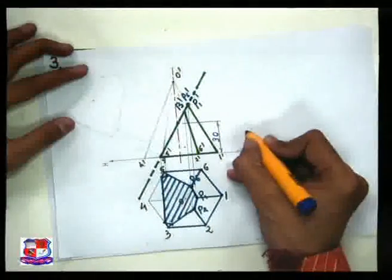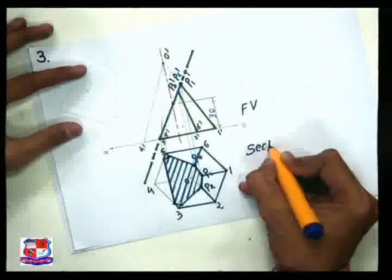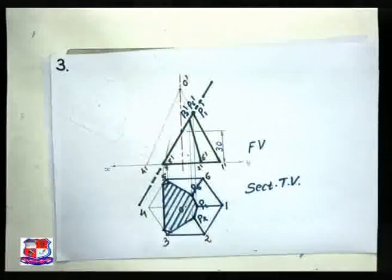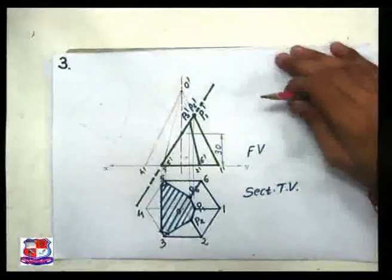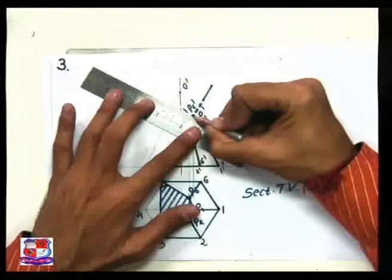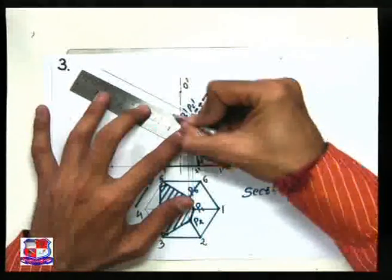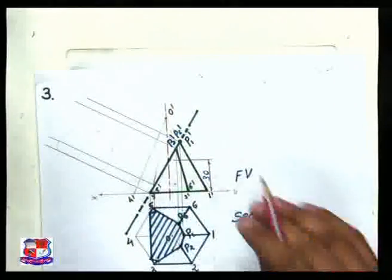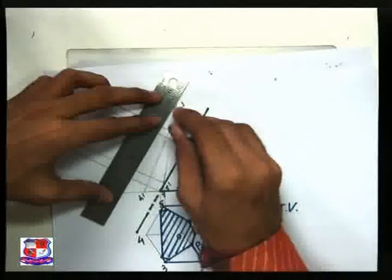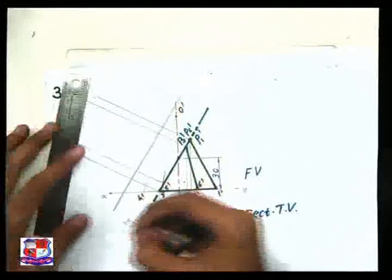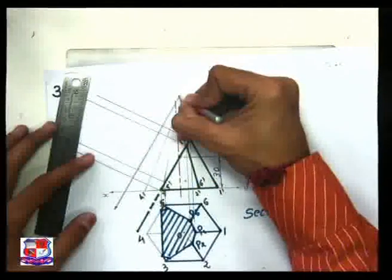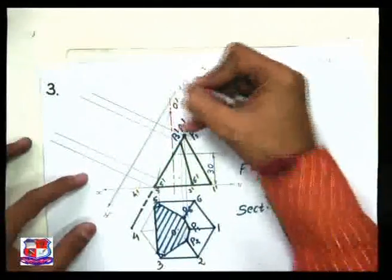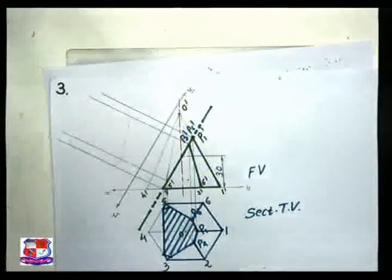This is the sectional top view. You can write the name — this is the front view and this is the sectional top view. For the true shape of the section, draw lines perpendicular to the cutting plane from each point P1, P2, P3, and so on. Also draw a reference line, named X1Y1 or X dash Y dash, to avoid overlapping with the front view.